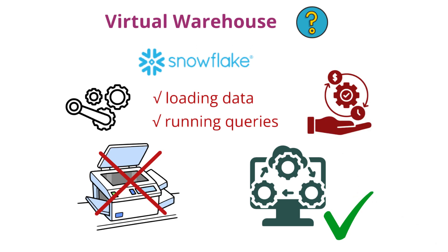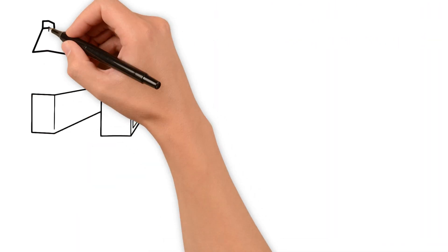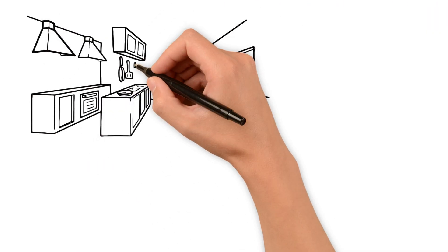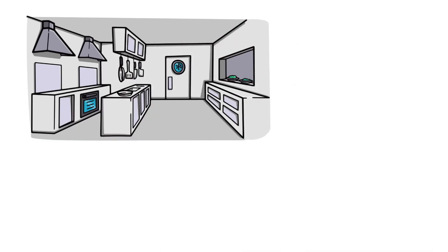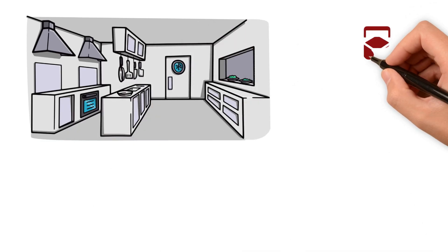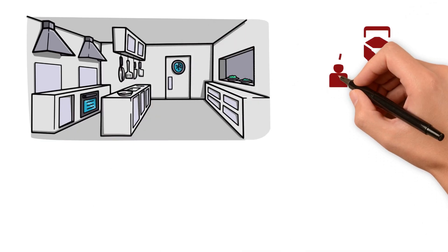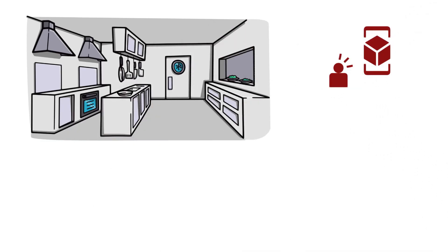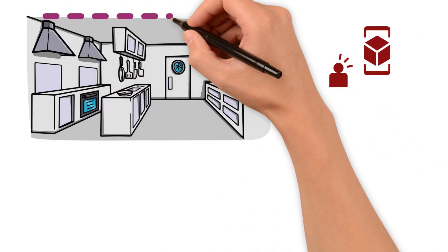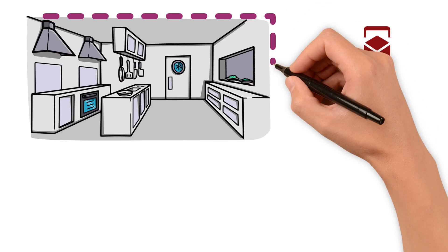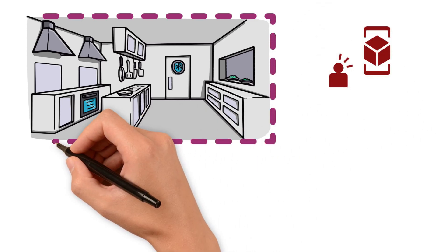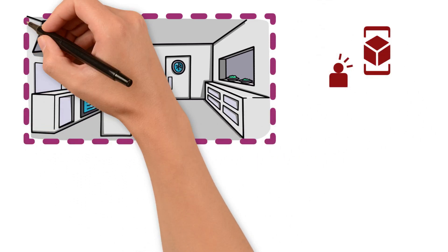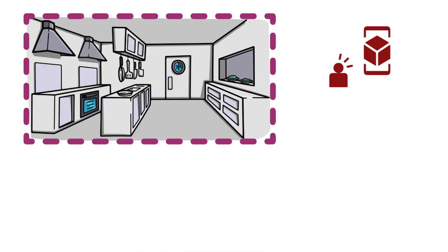Think of it like this. Imagine you have a kitchen where you cook meals. The virtual warehouse is like a fully equipped kitchen you can rent whenever you need to prepare a meal. When you're done, you can turn off the kitchen until the next time.